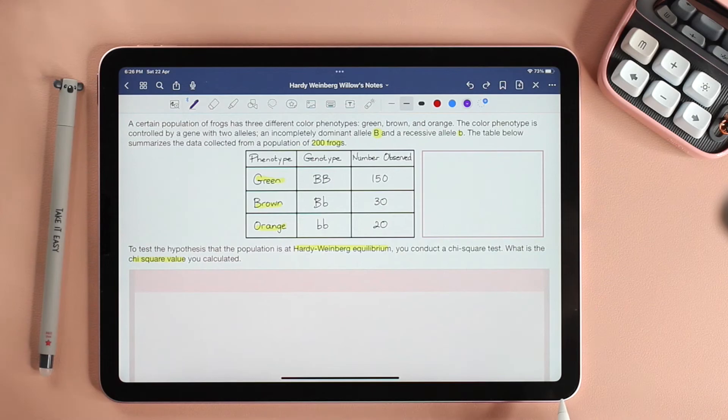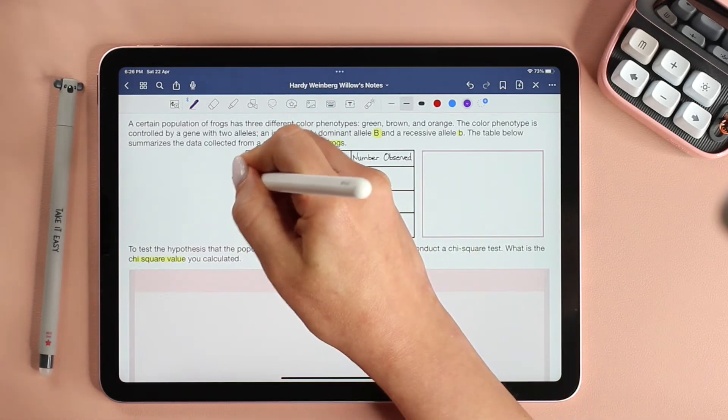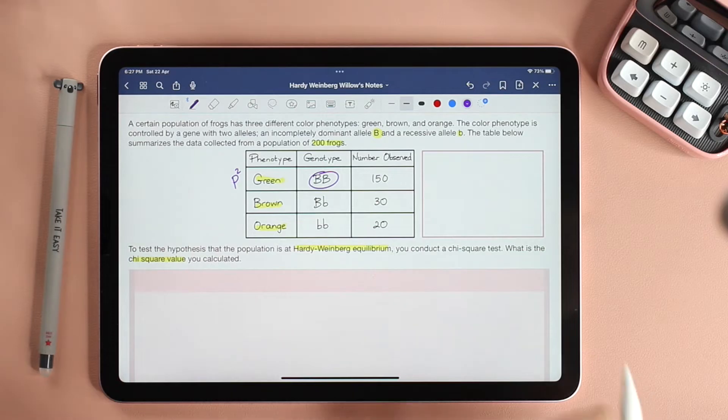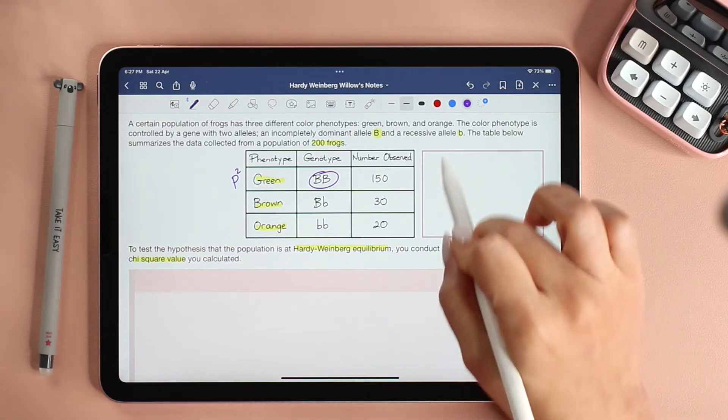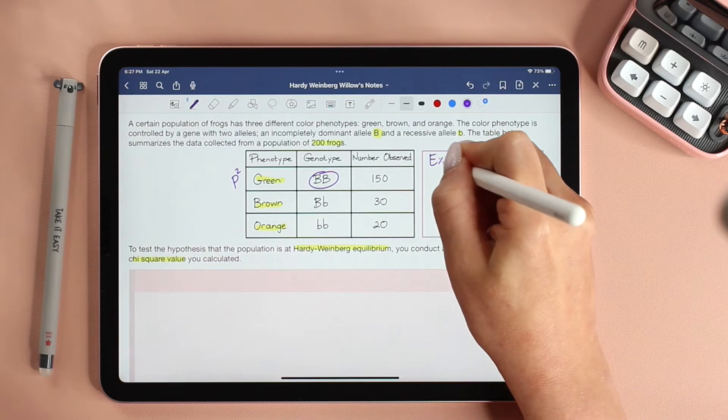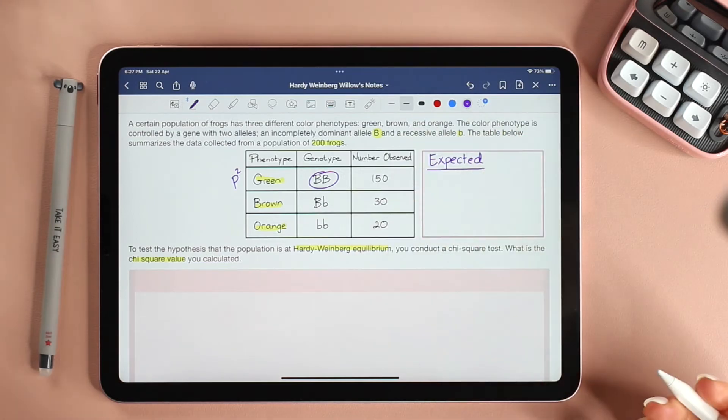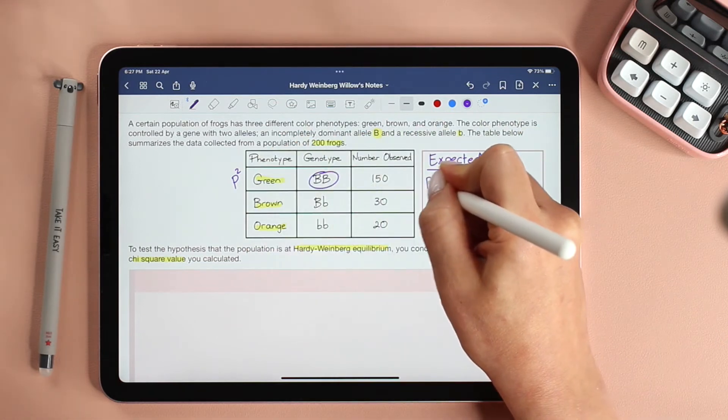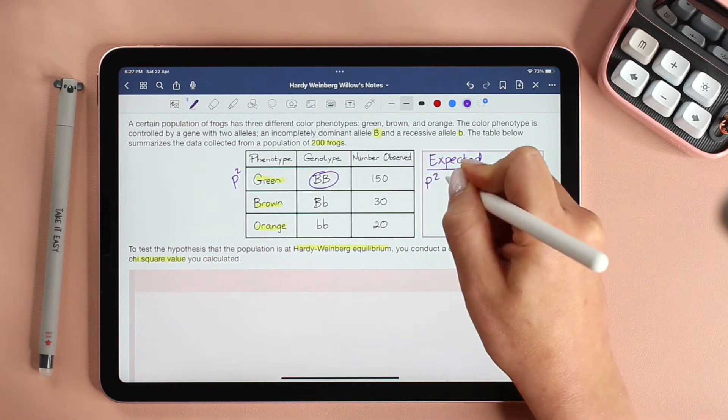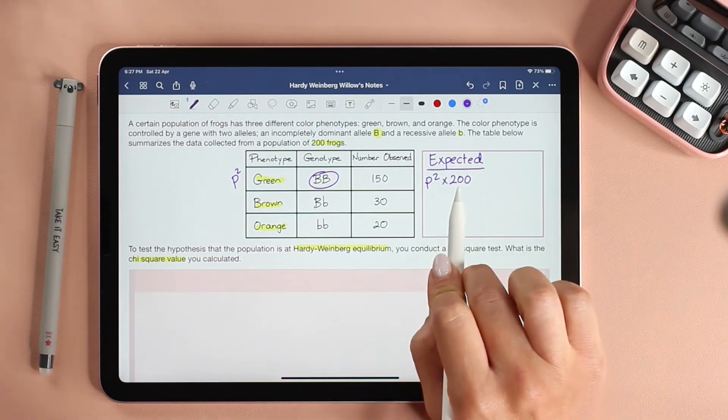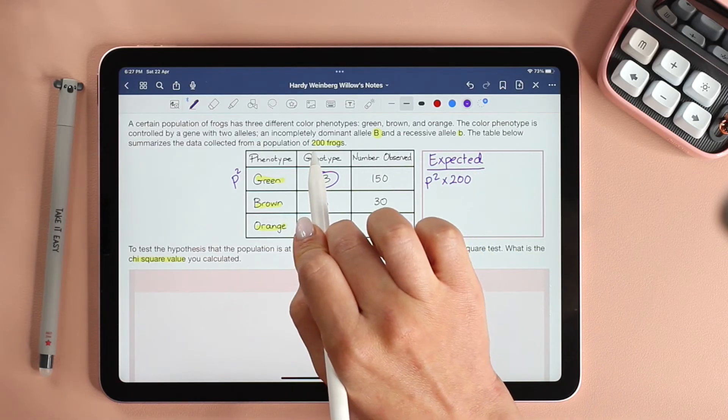In Hardy-Weinberg equilibrium, the frequency of the homozygous dominant individuals is represented as p². So p² is the frequency, not the number of individuals that are homozygous dominant. But here in the expected, we need to calculate the number of individuals who are homozygous dominant. So for green, we're going to say p² times 200. Why 200? Because we have a total of 200 frogs.